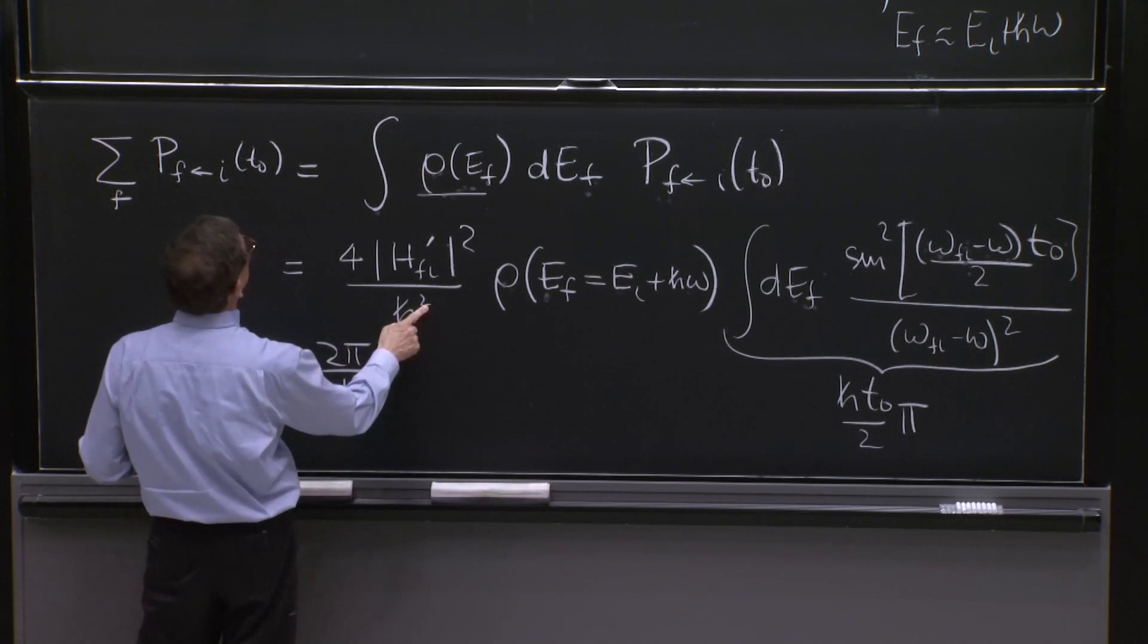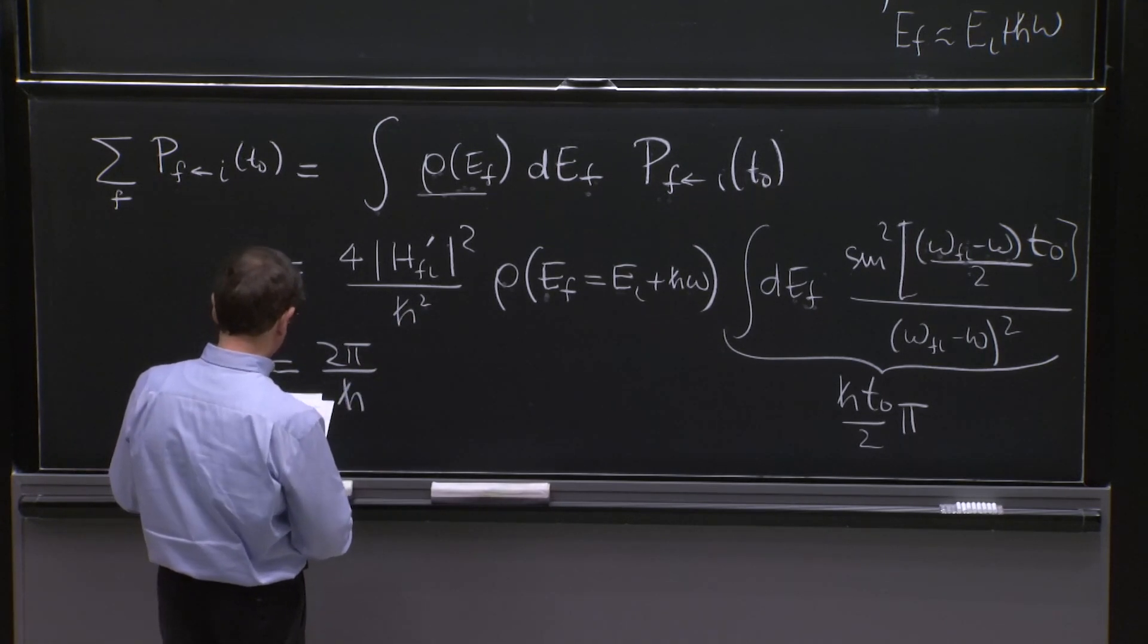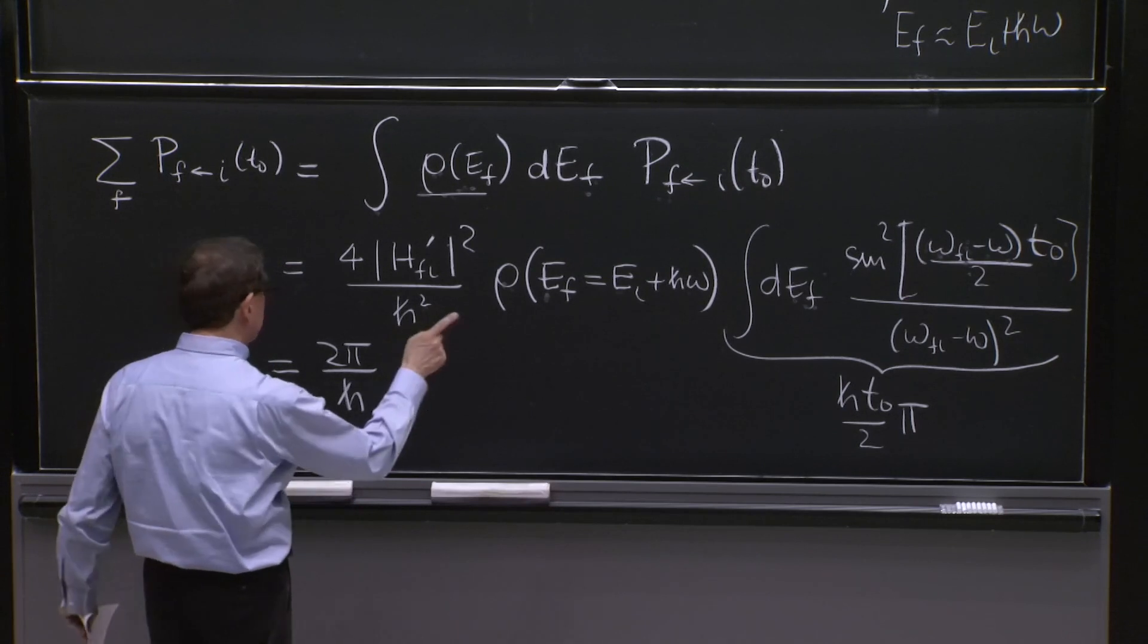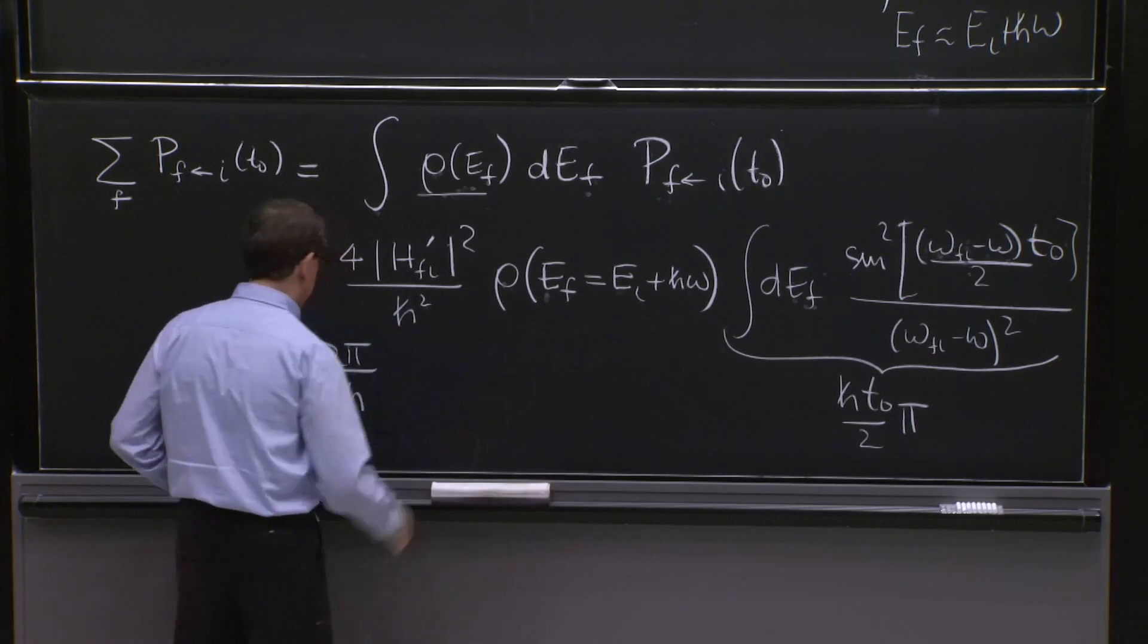Before when we did it was when omega fi was equal to 0. That's why in the constant transitions, you conserved energy.